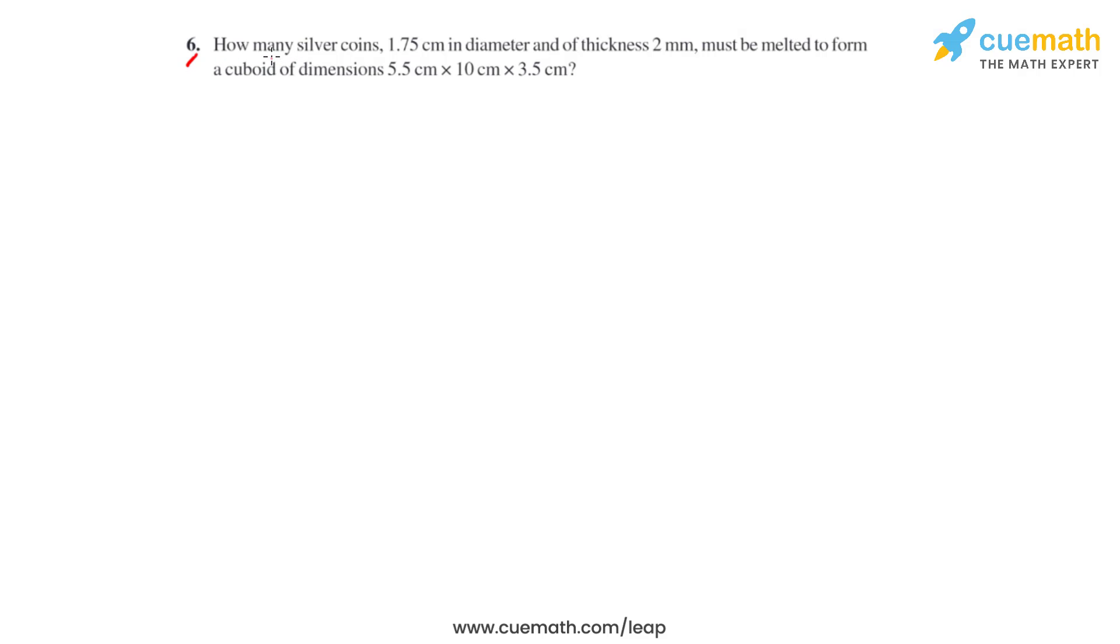Question number 6 asks: How many silver coins, 1.75 centimeters in diameter and of thickness 2 millimeters, must be melted to form a cuboid of dimensions 5.5 centimeters times 10 centimeters times 3.5 centimeters?